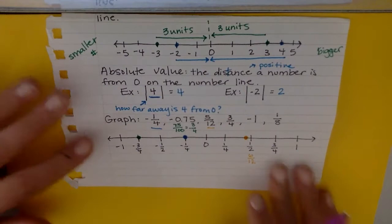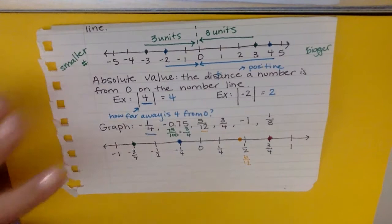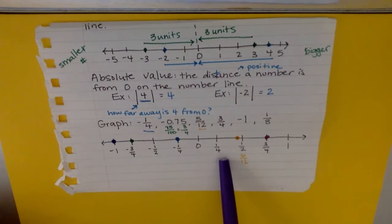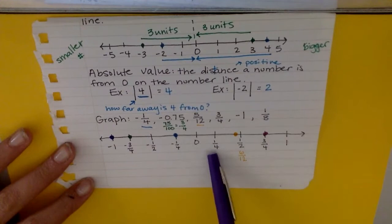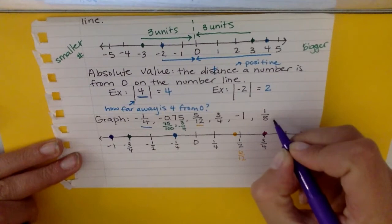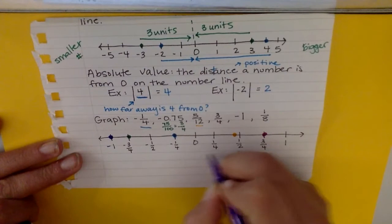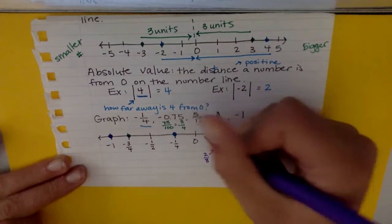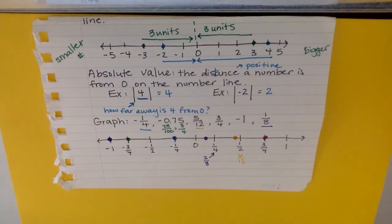I also have the number three fourths which is on my graph. I have negative one which is also on my graph, and I have one eighth. So I have one fourth and nothing smaller than that. I can tell one eighth is going to be smaller. I can kind of think about this in terms of fourths. If I wanted to know what fourths were in terms of eighths, I would need to multiply both the top and the bottom by two, and that would give me two eighths. So this point right here is two eighths, so I know I need to be somewhere halfway in between, which would be right here.